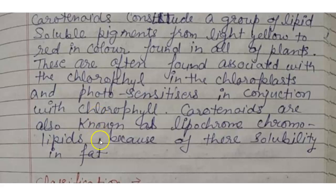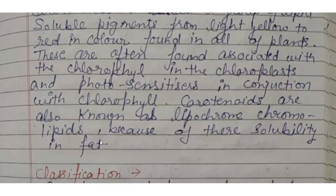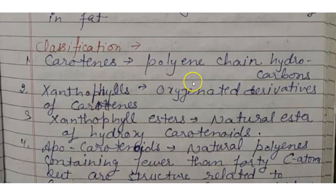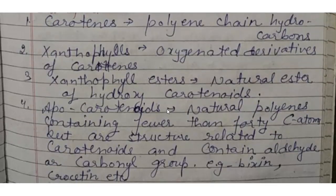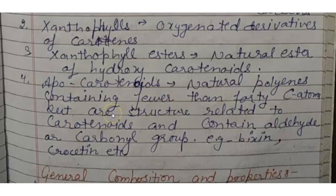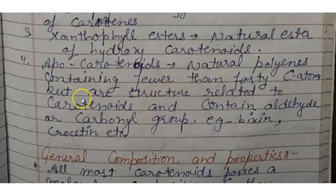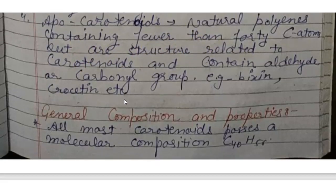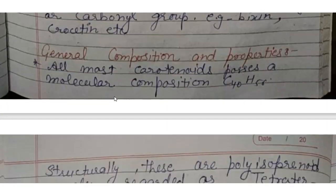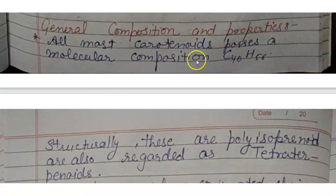Carotenoids are also known as lipochrome or chromolipid because of their solubility in fat. Classification: carotenes are polyene chain hydrocarbons; xanthophylls are oxygenated derivatives of carotene; xanthophyll esters are natural esters of hydroxy carotenoids; apocarotenoids are natural polyenes containing fewer than 40 carbon atoms but with a structure related to carotenoids, containing aldehyde or carbonyl groups — for example, bixin and crocetin.